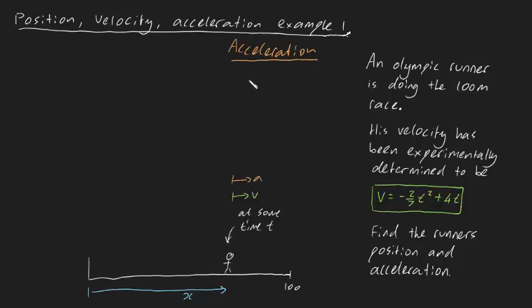And the equation which relates acceleration to velocity is dv dt is going to be equal to a, right? And this is a definition, and this is always true. And you can see just from this expression that to find our acceleration, all we need to do is differentiate our velocity with respect to time. So let's do that.